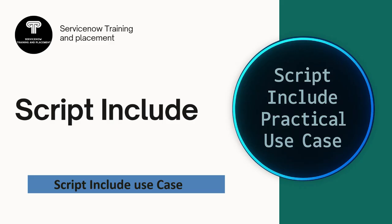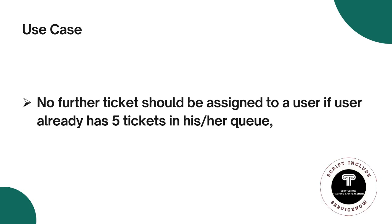In today's video we are going to discuss the practical use case of script include. Our use case is: no further ticket should be assigned to a user if the user already has five tickets in his or her queue. Let's see the practical demonstration of this use case and thereafter we will see the coding part of it.